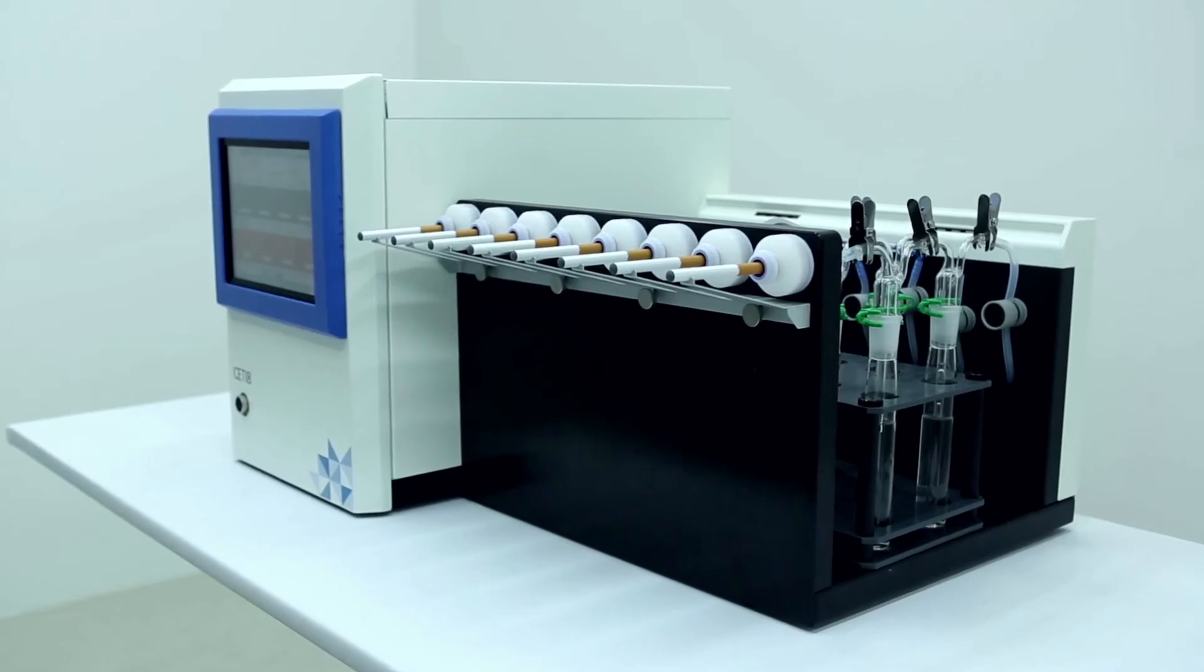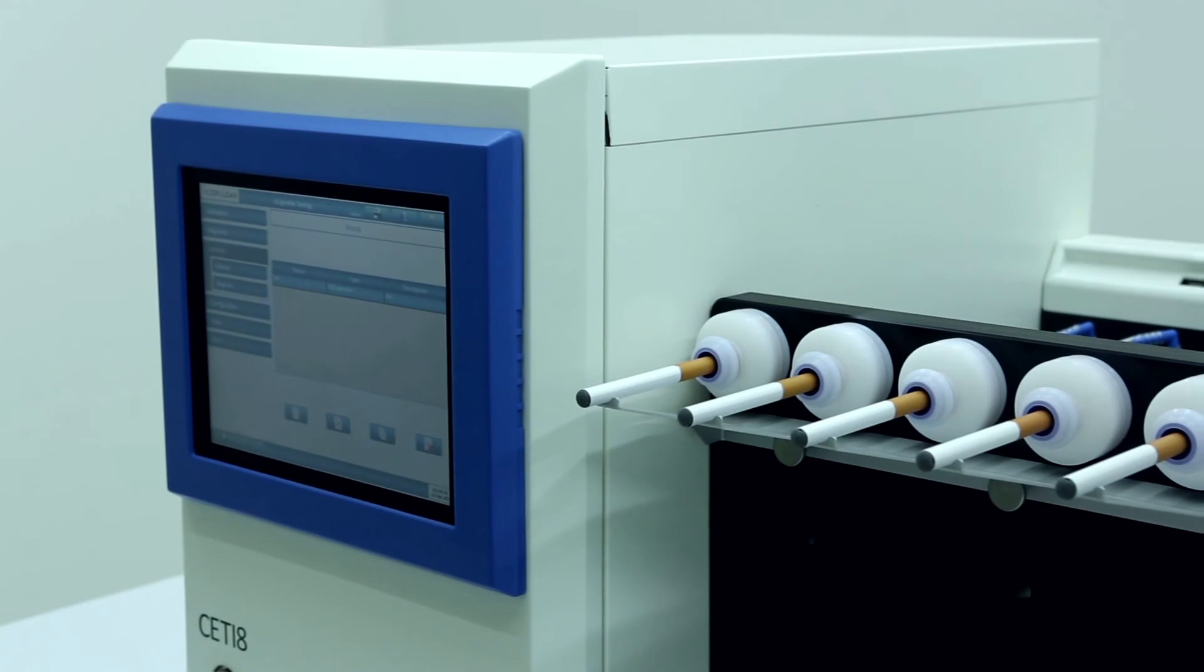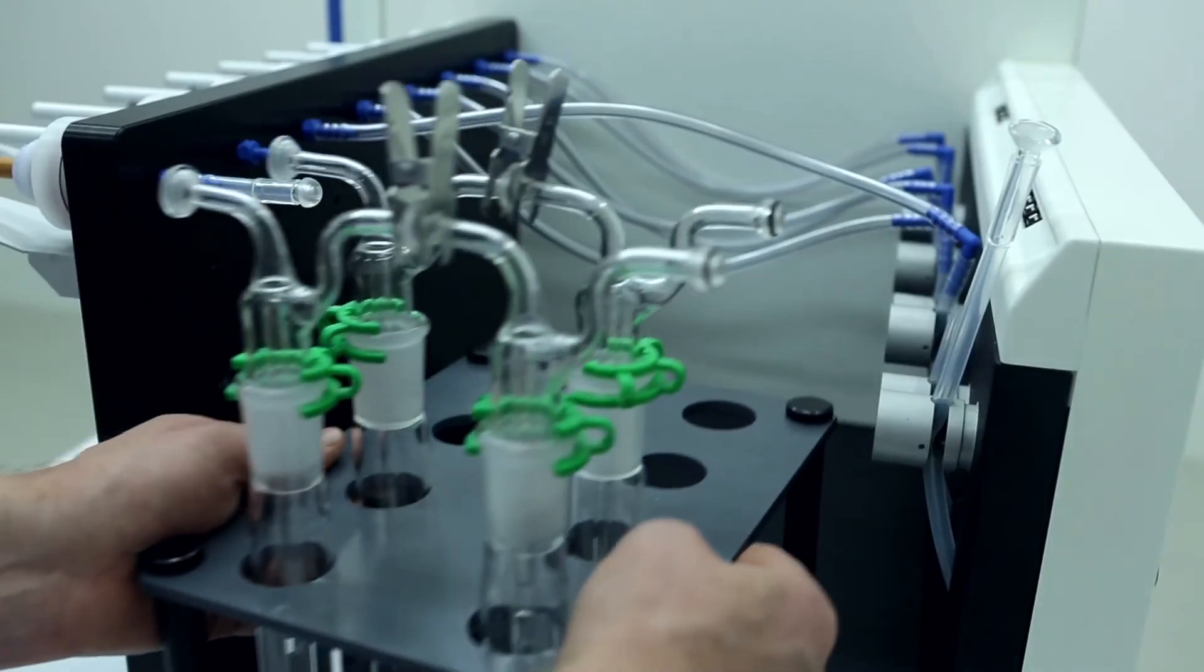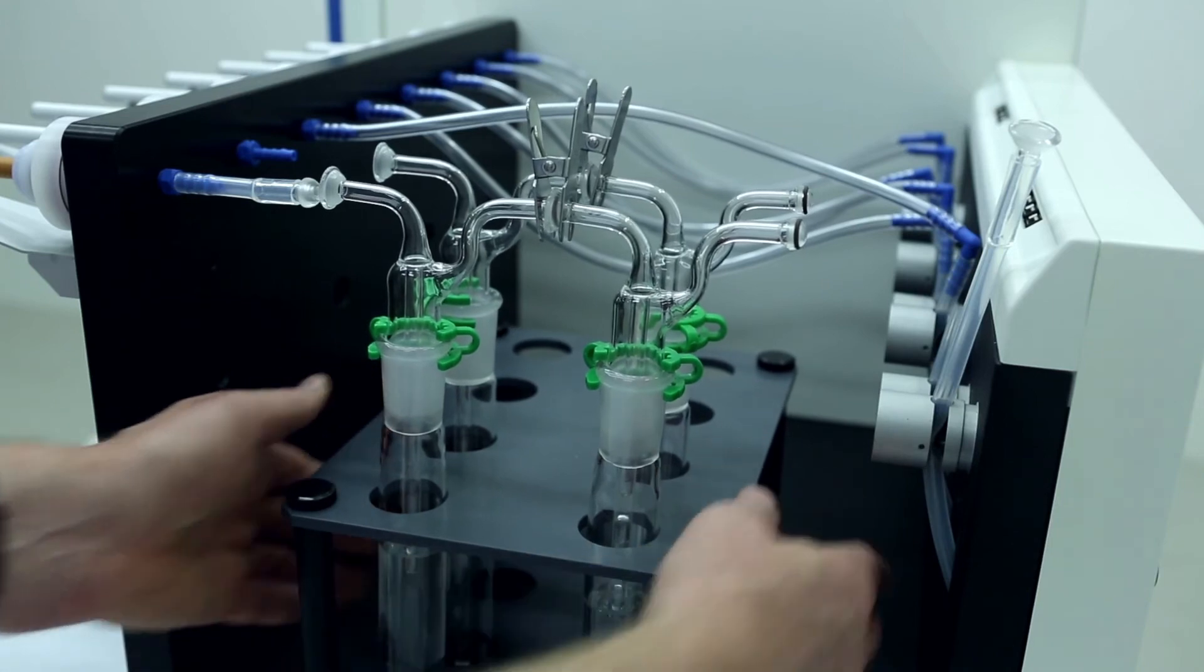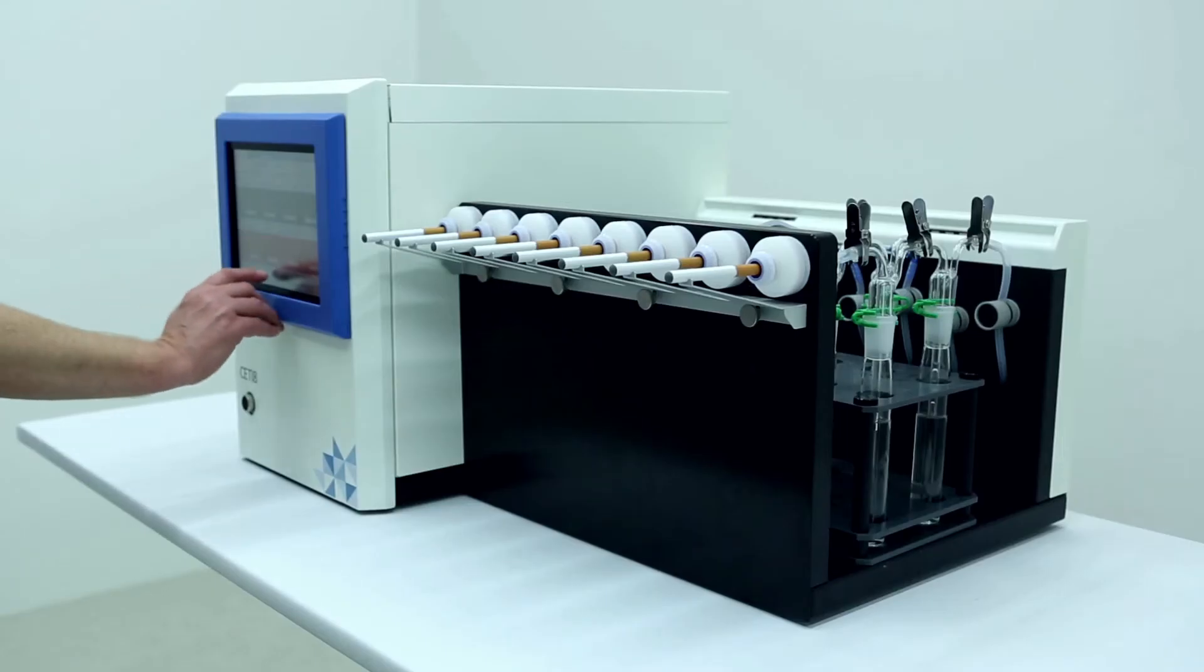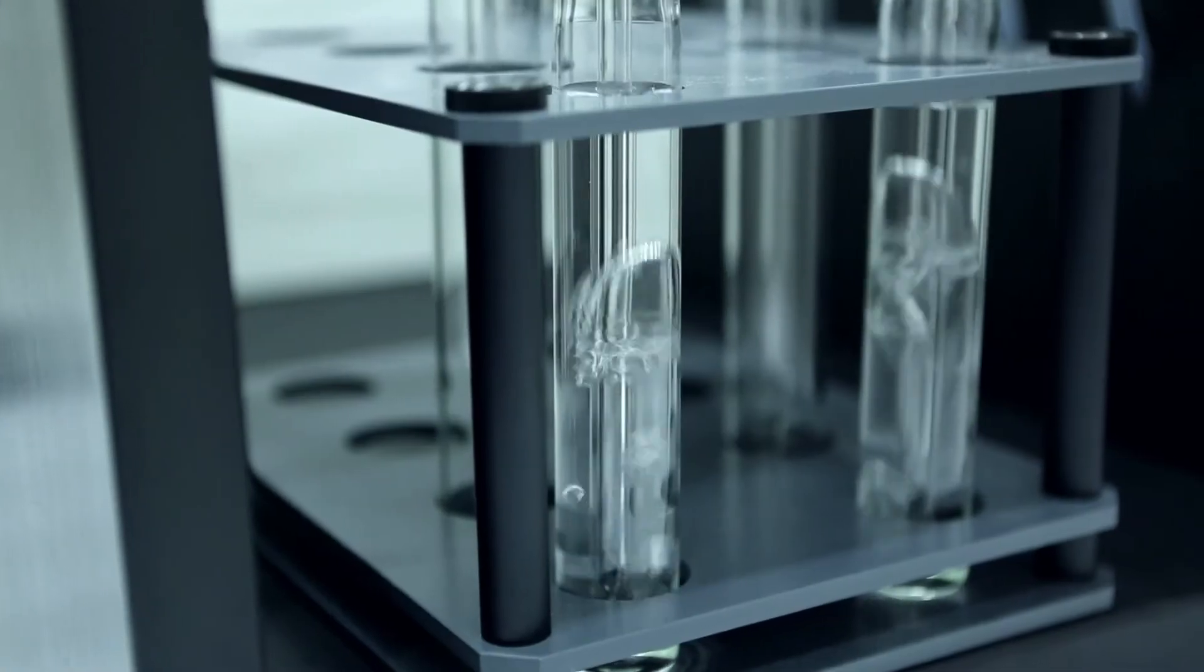The CETI-8 uses traditional 44mm Cambridge filter holders to capture the vapor. Alternatively, the revised CETI-8 allows connectivity to all 8 channels to individual impinger traps for alternative capture methods.